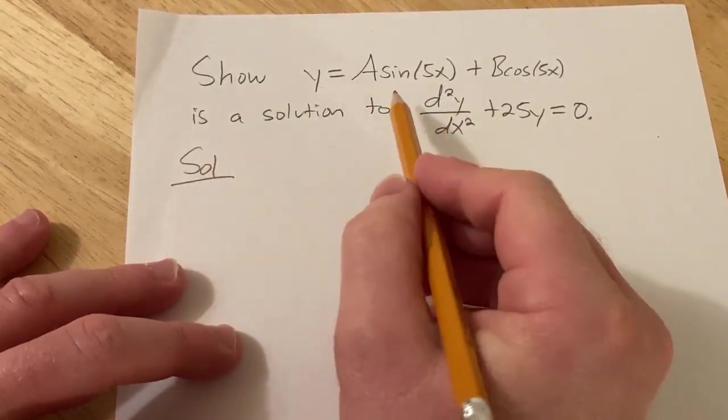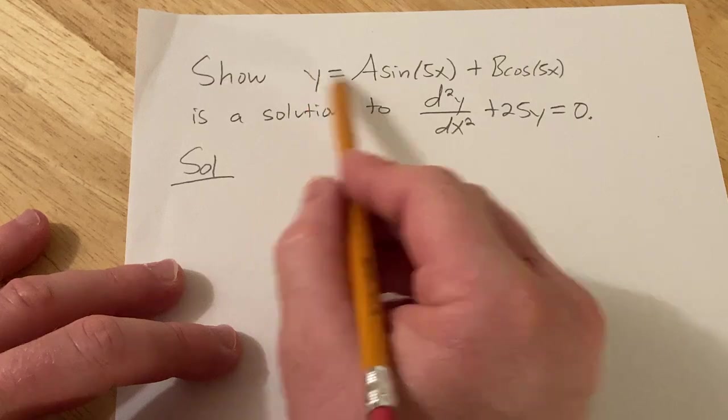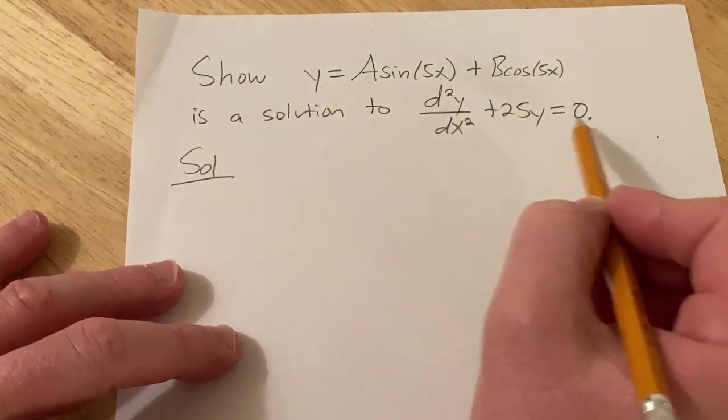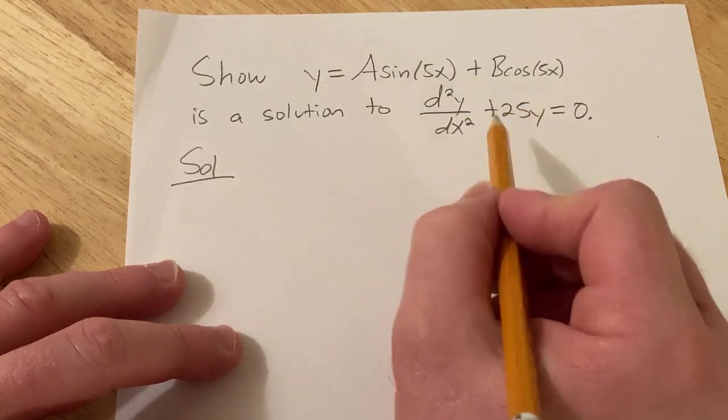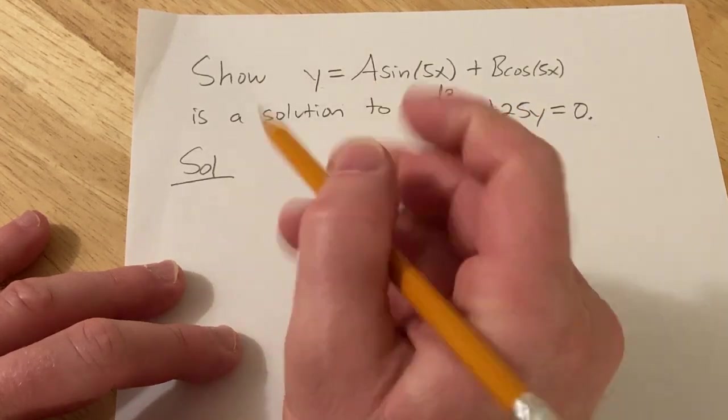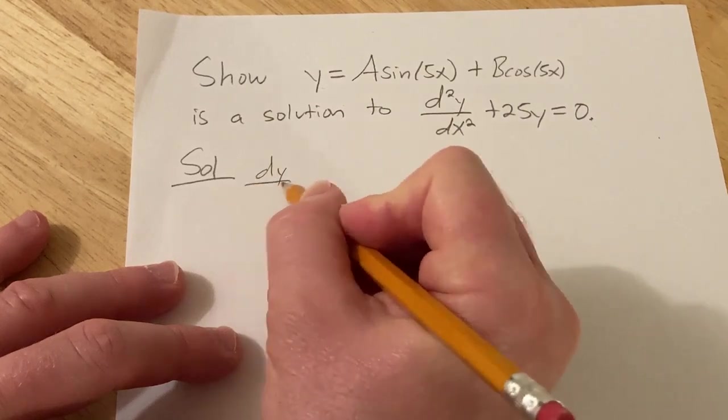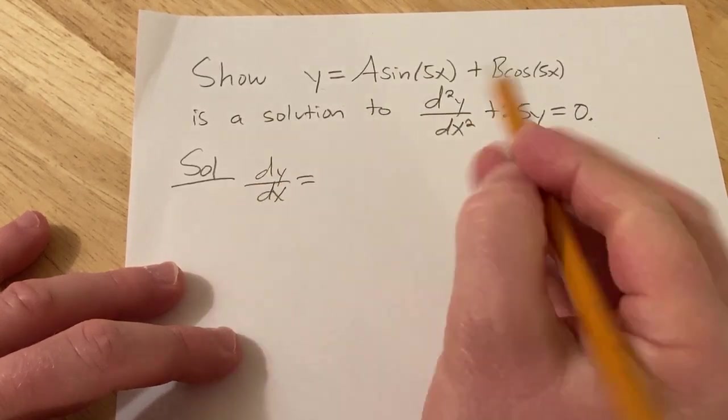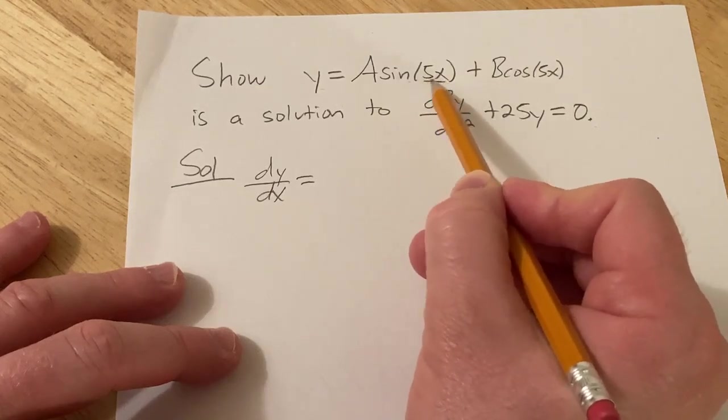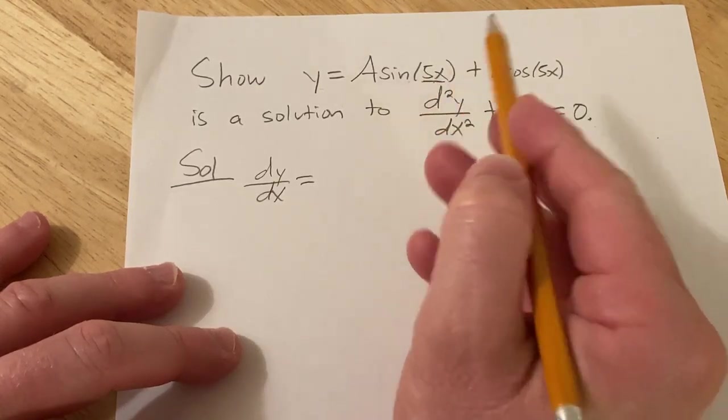Solution. To do this problem we basically have to take this function and plug it into this DE and show that it's equal to zero. So because we have the second derivative, we'll have to take the derivative of this twice. So the first derivative, dy/dx, the derivative of sine is cosine, but we have a 5x here so we're going to have to multiply by the derivative of the inside using the chain rule.